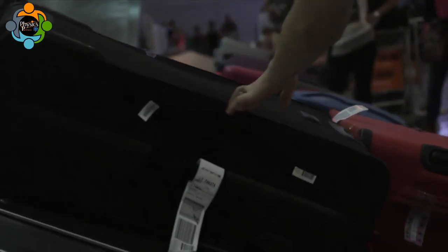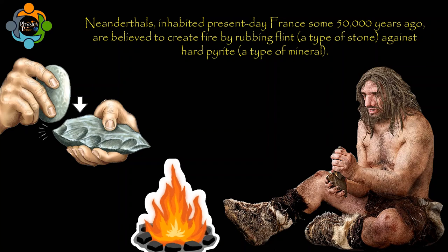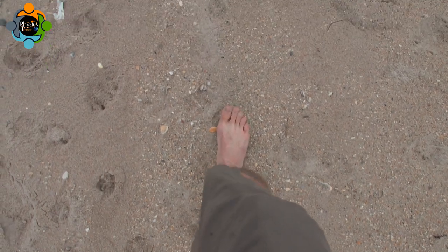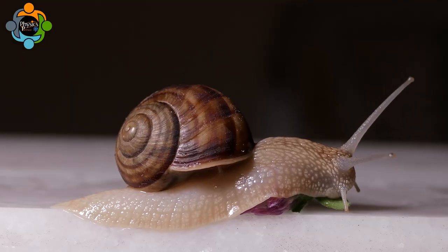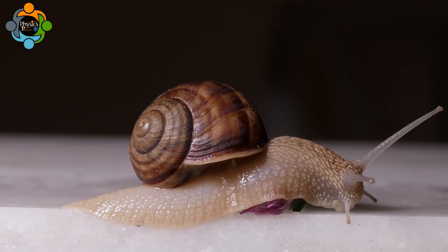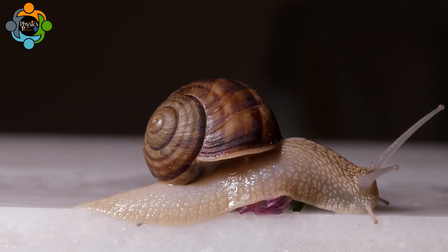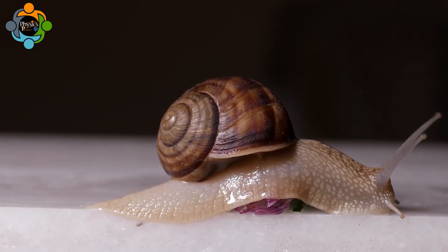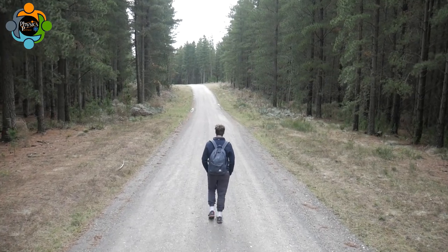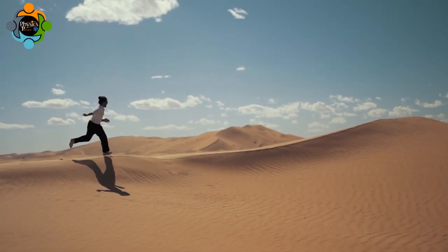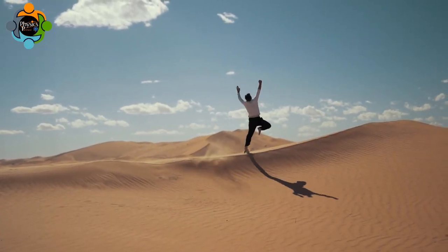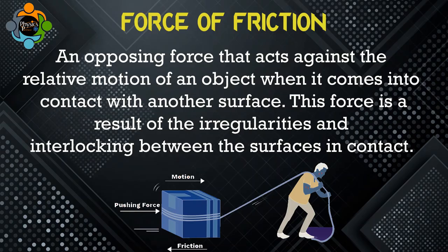One of the earliest and most important discoveries that humans made was that of fire, which is intimately related to the concept of friction. In our daily lives we move with the help of friction, a force that resists the relative motion of an object when it comes into contact with another object. Without friction we wouldn't be able to walk, run, or even stand still without slipping.